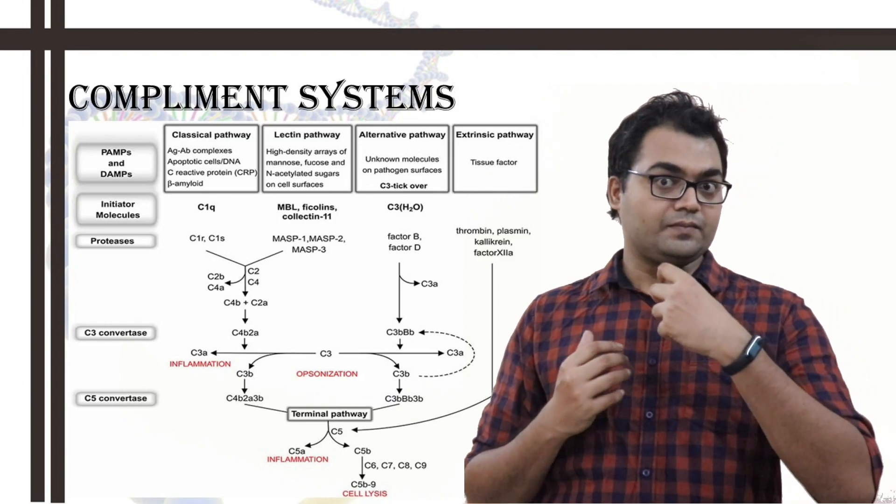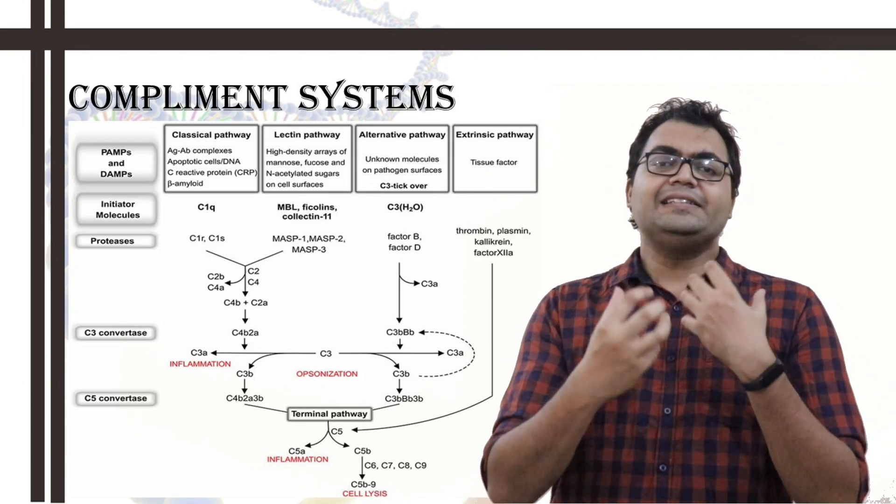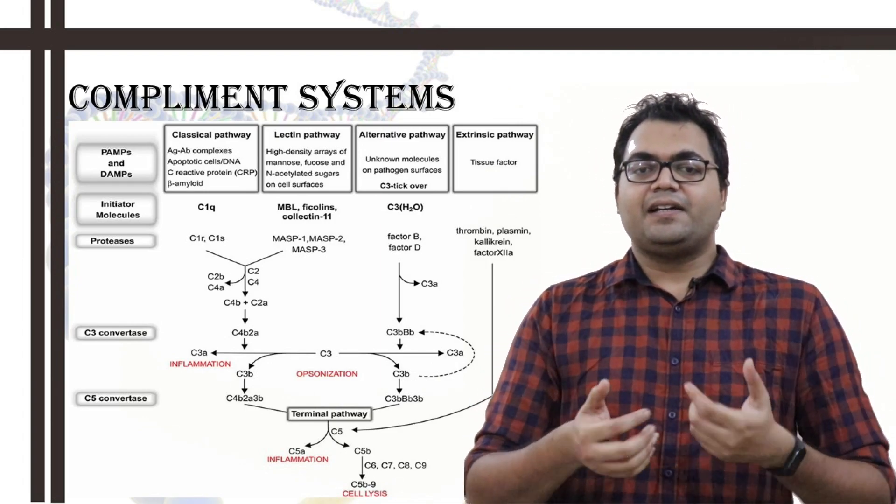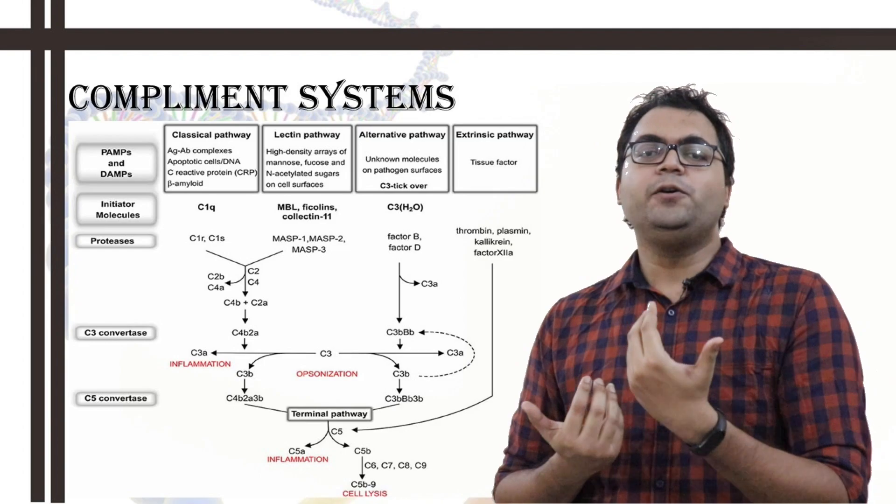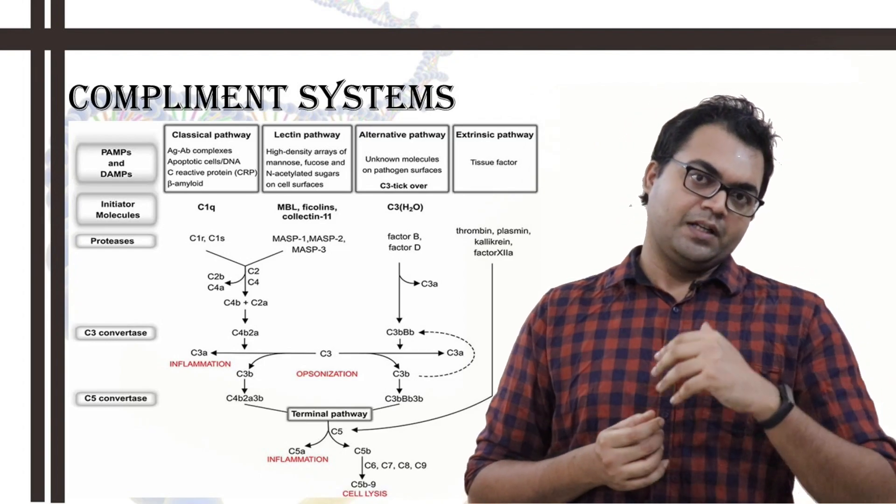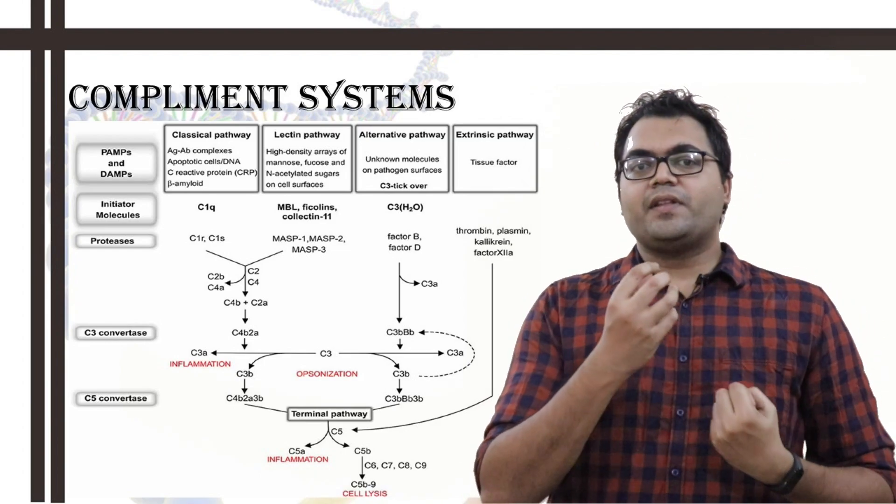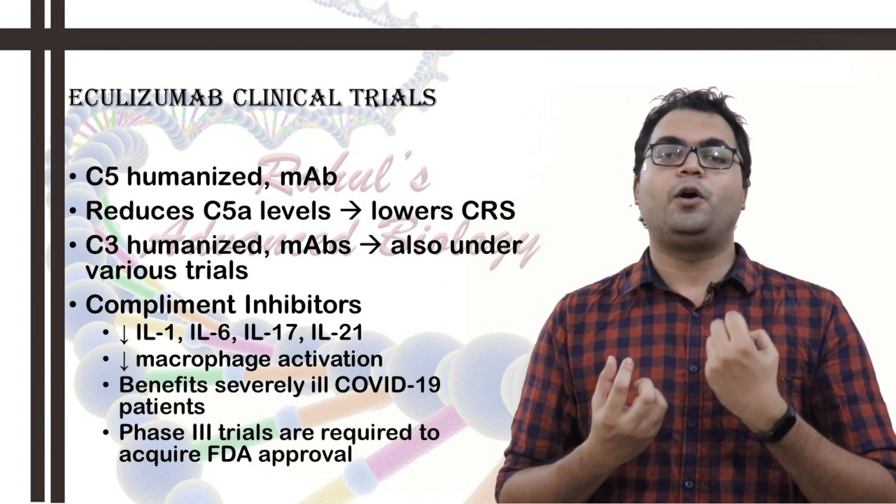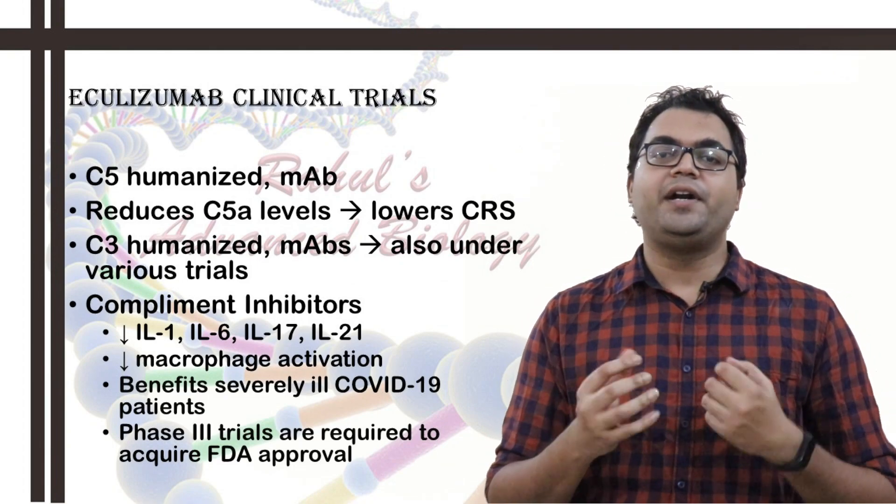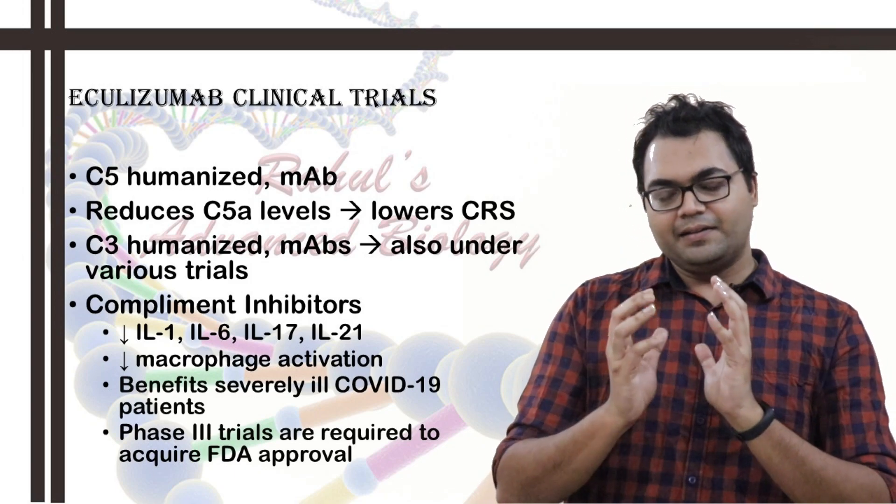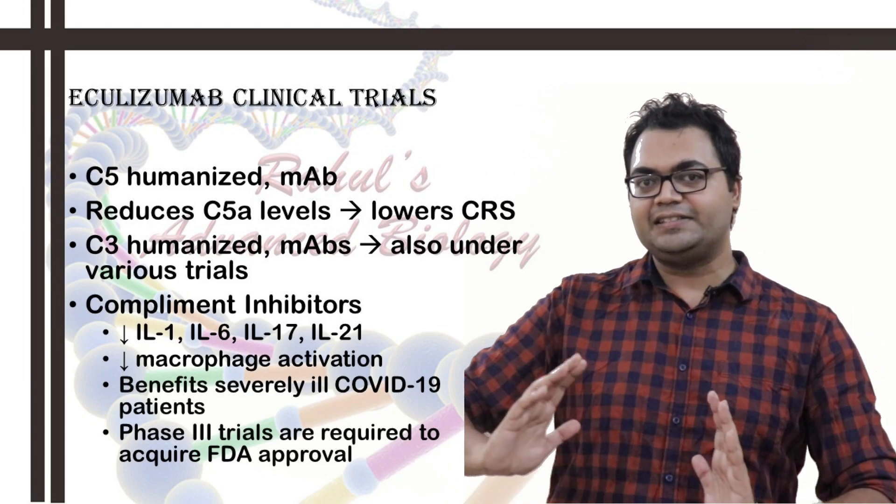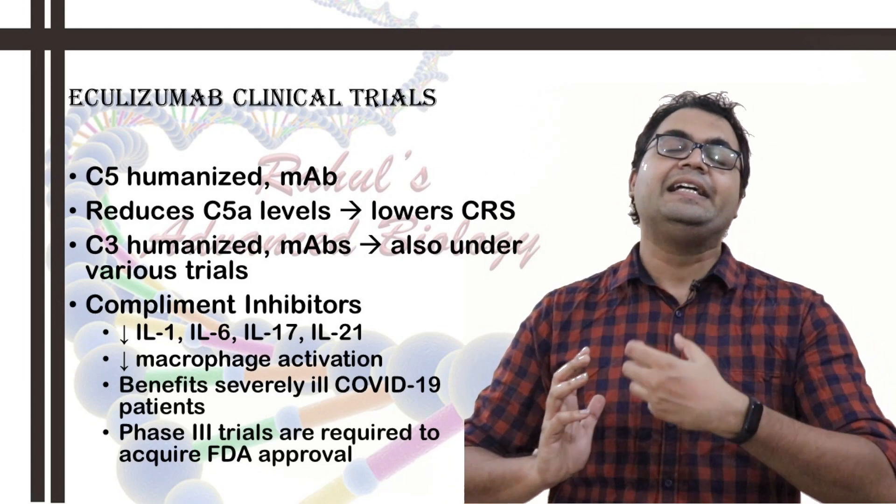Now, what happens is, in COVID-19, the C3a, C5a, a specific induced ARDS has been found. Now, eculizumab is a specific C5 blocker, humanized monoclonal antibody which binds to C5 and can contain C5. So, that the downstream C5a anaphylatoxin and C5b opsonin synthesis is ceased.